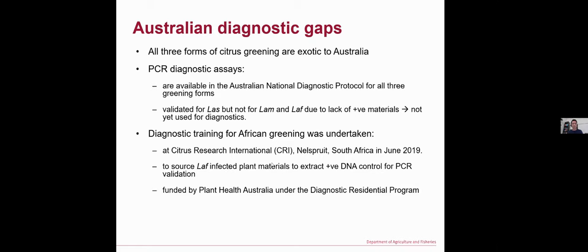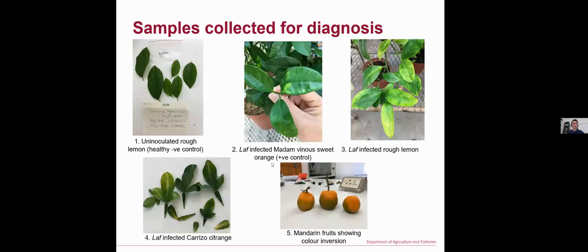For that reason, in June 2019 I traveled to Nelspruit in South Africa to undertake diagnostic training for African citrus greening at the Citrus Research International. The other purpose of my trip was also to source lab-infected plant material to prepare positive DNA controls for validation of the PCR assays. My trip was funded by Plant Health Australia under the Diagnostic Residency Program.